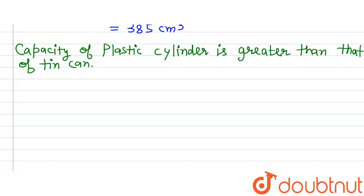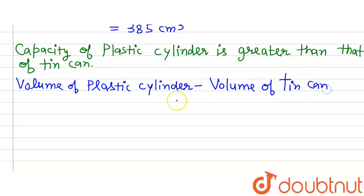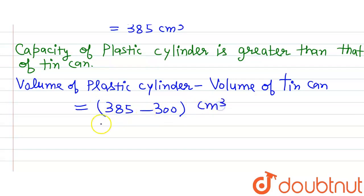The second part of the question asks by how much. To find that, we need to find the difference: volume of plastic cylinder minus volume of tin can = 385 − 300 cm³, which gives us 85 cm³. The plastic cylinder has greater capacity by 85 cm³.